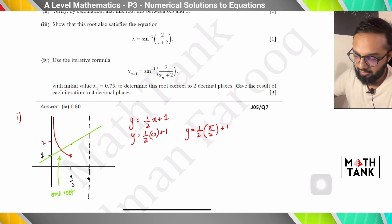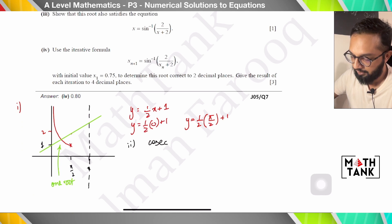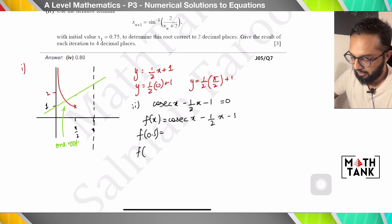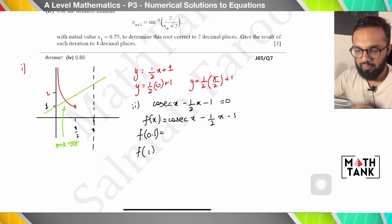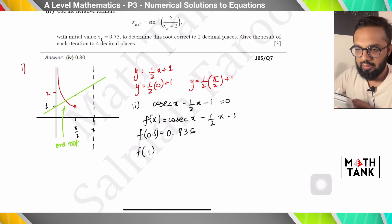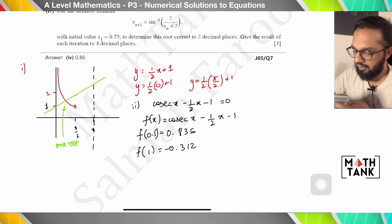Part 2 says verify by calculation. Whenever doing this, bring everything to one side and create a function: cosec x − ½x − 1 = 0, so f(x) = cosec x − ½x − 1. I need to verify the root is between 0.5 and 1. I put in 0.5 and 1 — since cosec x can't be typed directly, I use 1/sin x, with the calculator in radians. I get 0.836 and then −0.312 — a change of sign indicates a root.